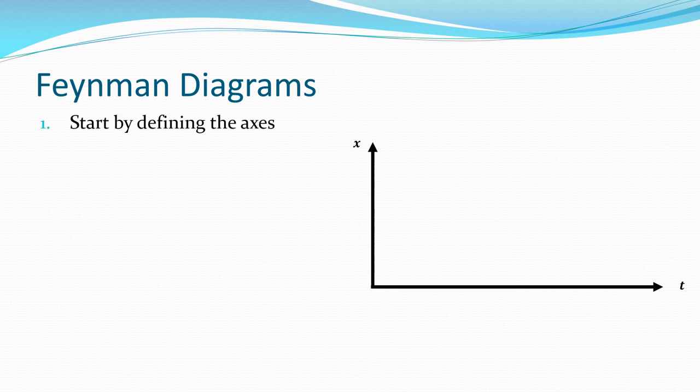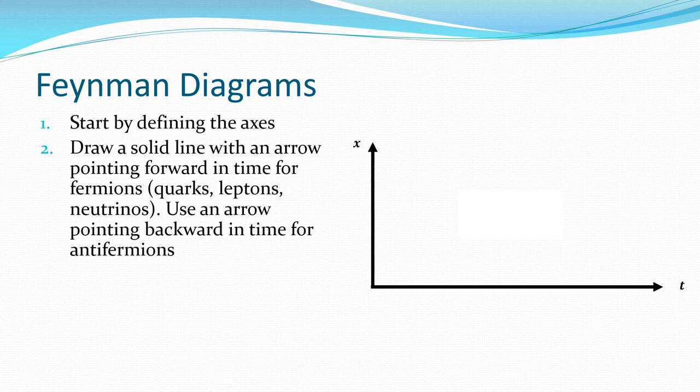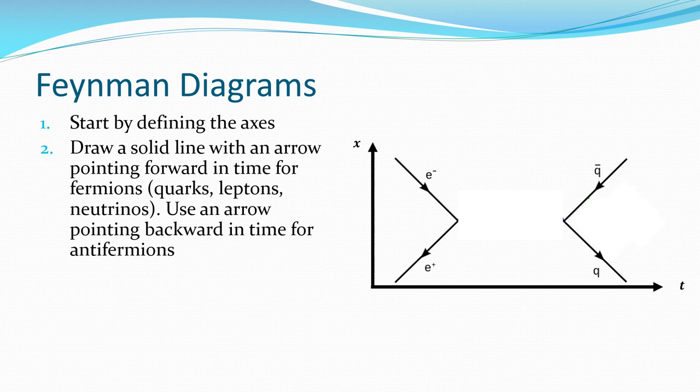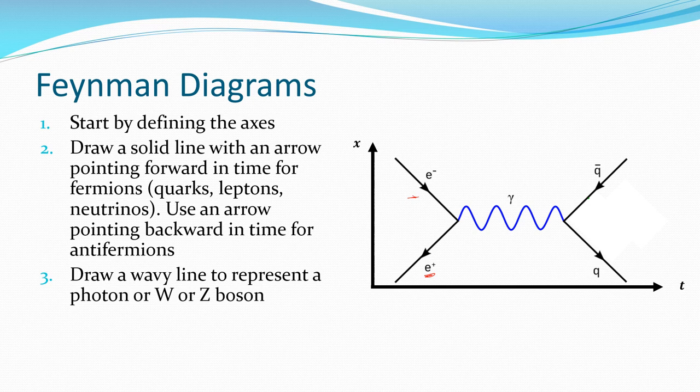So number one, define your axes. Number two, draw a solid line with an arrow pointing forward in time for your fermions. That's your quarks, your leptons, your neutrinos and so on. An arrow backwards in time for the anti-matter particles. So our electron is this guy here pointing forward in time. A positron is the anti-matter version of it pointing backwards in time. Draw a wavy line to represent the photon or a W or Z boson because they're our bosons that mediate the forces. So we're saying an electron and a positron are coming together here in an interaction.